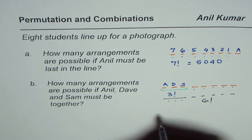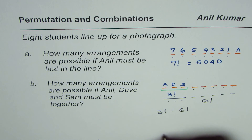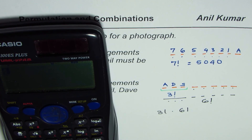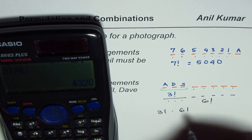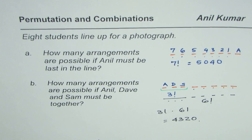Therefore, the solution is three factorial times six factorial, which equals 4320. That is how it could be answered. I hope that helps. Thank you.